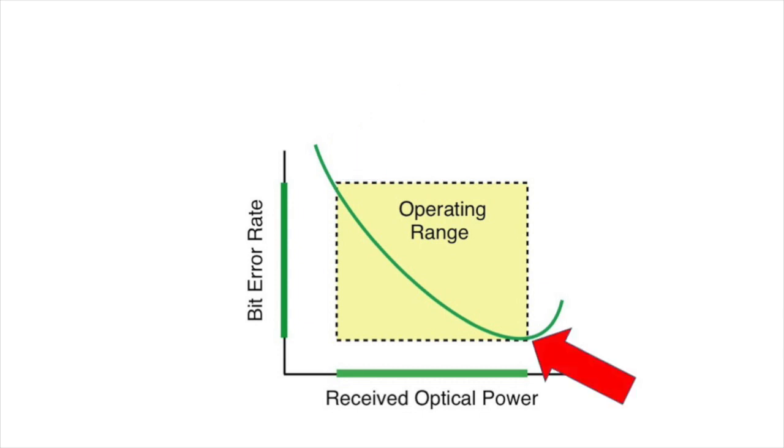At the same time, you don't want too much power because the link will be overloaded and you'll get high bit error rate again. So that yellow square there defines the operating range of a typical fiber optic data link and shows you the minimum and maximum power.